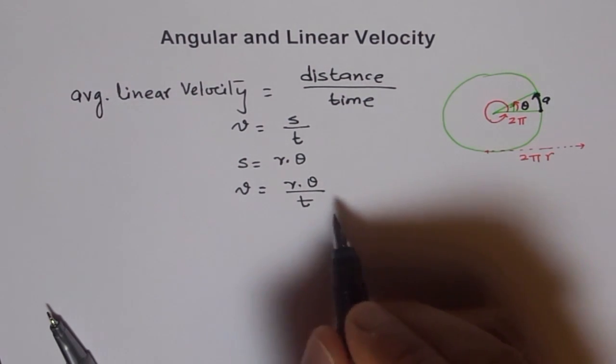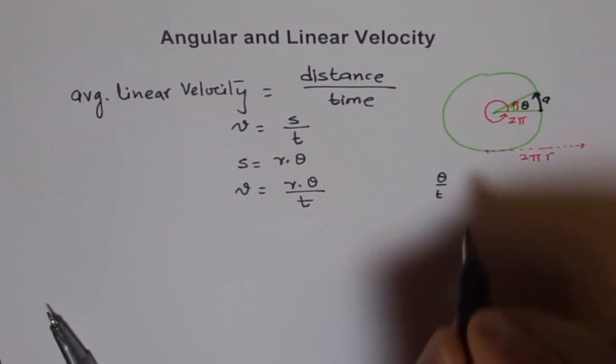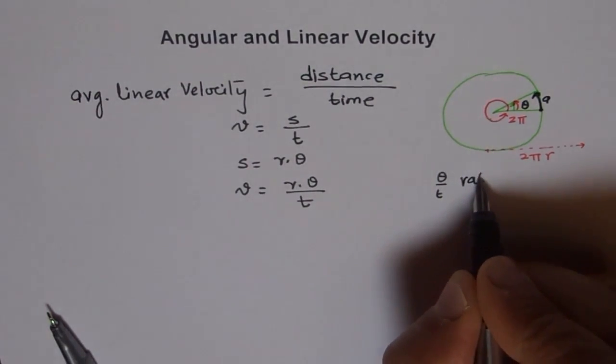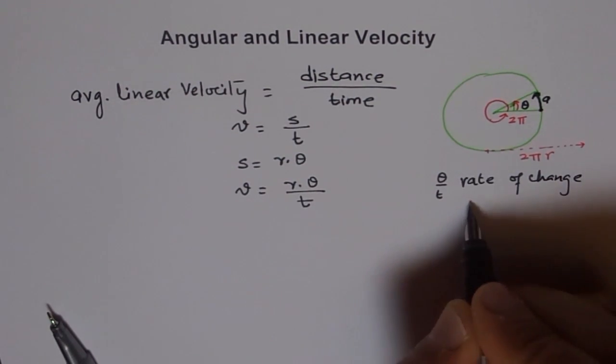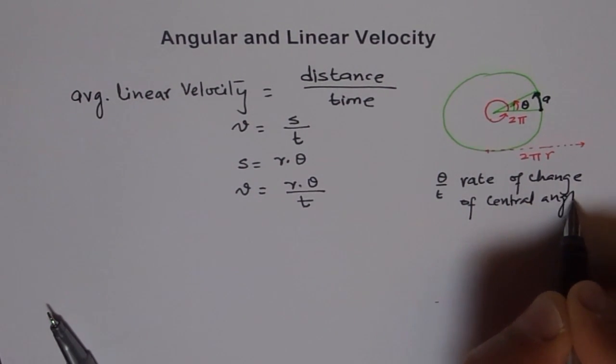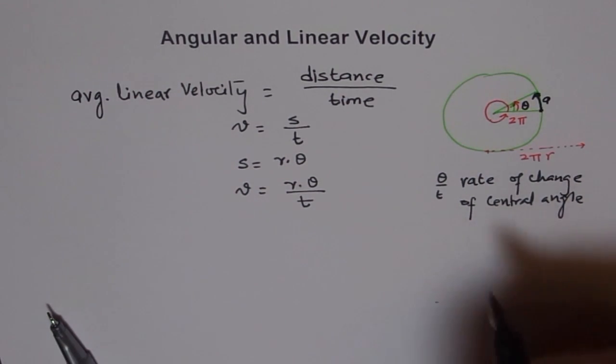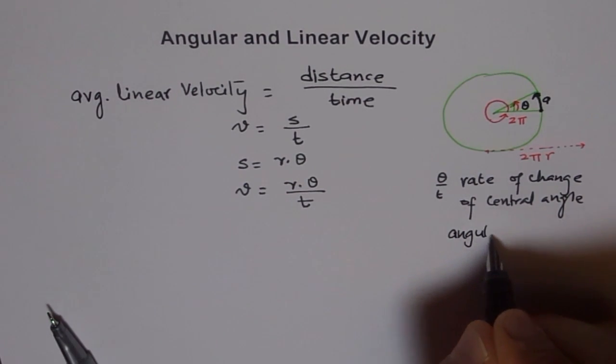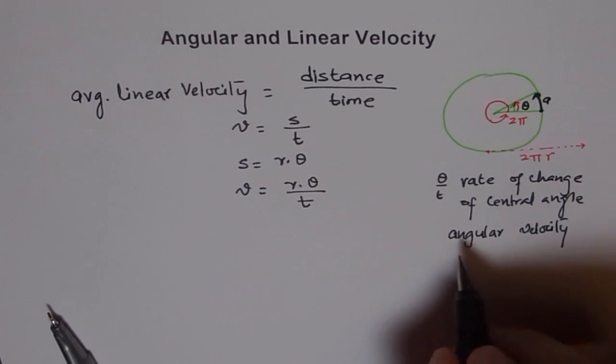So θ over t represents what? θ over t is rate of change of central angle, and that is called by definition angular velocity. So this is actually angular velocity. We normally represent angular velocity by Greek letter ω. This should be called ω.